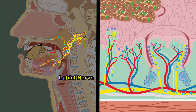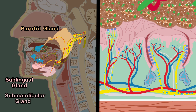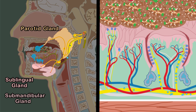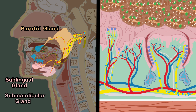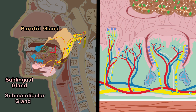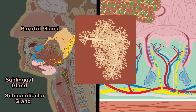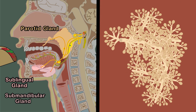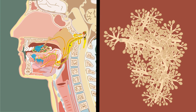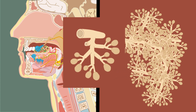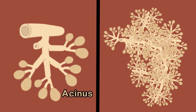Saliva is largely produced by three major pairs of salivary glands that lie outside the oral cavity and discharge saliva through short ducts into the mouth. If we zoom in on the parotid gland, we can see that it resembles a cluster of grapes. It's composed of hundreds of tiny lobes called acini that produce saliva, which are connected by a duct that collects the saliva produced.